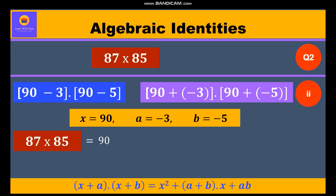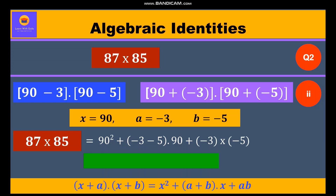Substituting, we get 90 whole square plus (minus 3 + minus 5) into 90 plus (minus 3) into (minus 5). Further, we solve: 8100 plus (minus 8) into 90 plus 15, giving us the answer.